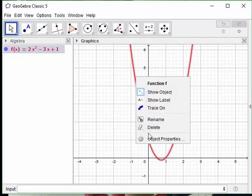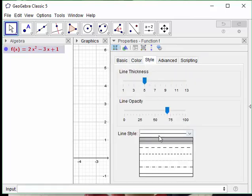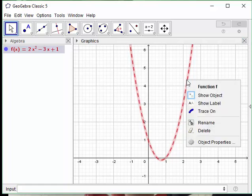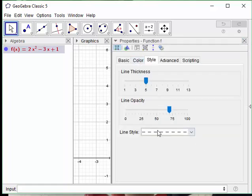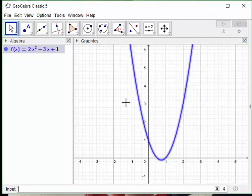Like anything in GeoGebra, you can right-click on it and look at object properties and change style. If you'd rather see a dotted line, or you could change the color, the thickness, you can pick whatever style you want for your graph.